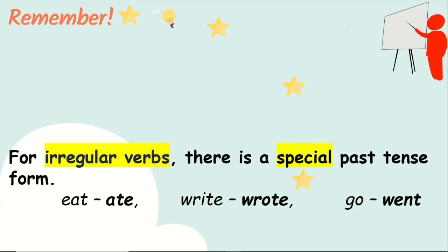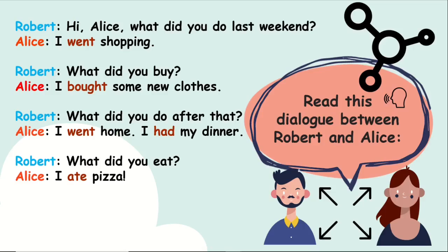The exceptions here are called irregular verbs. For irregular verbs there is a special past tense form: eat / ate; go / went. For example: 'I ate pasta yesterday.' Now we're going to read a dialogue between Robert and Alice to notice how the irregular verbs are used.